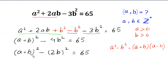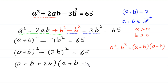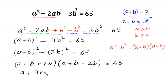This (a plus b) whole squared minus (2b) whole squared will become (a plus b plus 2b) times (a plus b minus 2b), which simplifies to (a plus 3b) times (a minus b) is equal to 65.